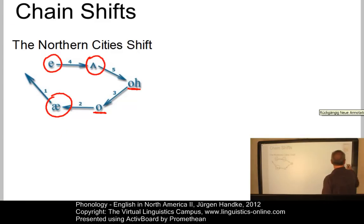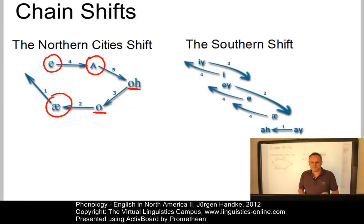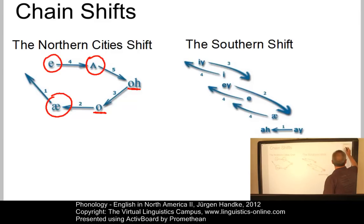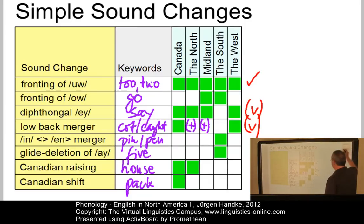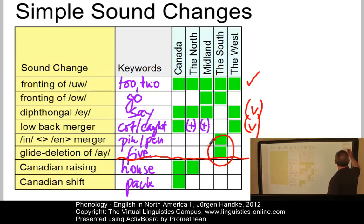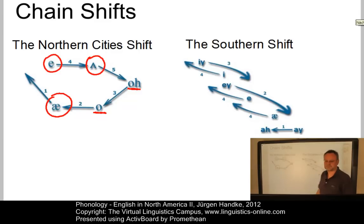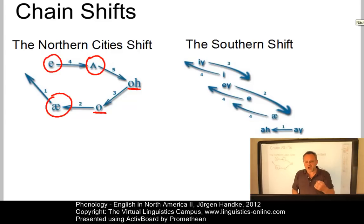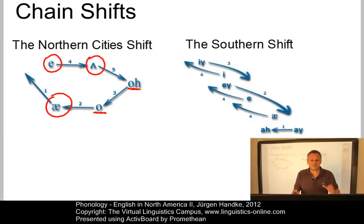The Southern Shift is triggered by the removal of I from the low central position. In most Southern states of the United States, the triggering movement is a monophthongization of I, which we have already seen as the glide deletion of I applying to the Southern states. When this monophthongization of I takes place, we can also observe a slight shift of the monophthongal nucleus towards the front as it enters the subsystem of long and in-gliding vowels.